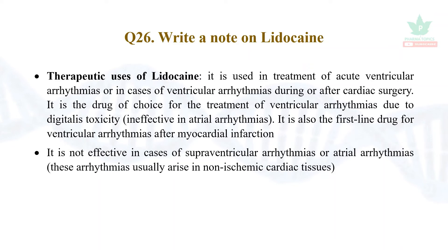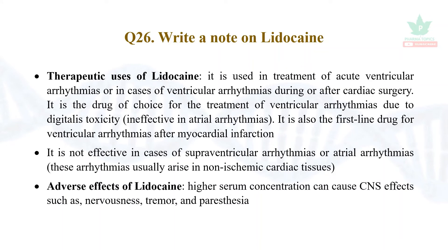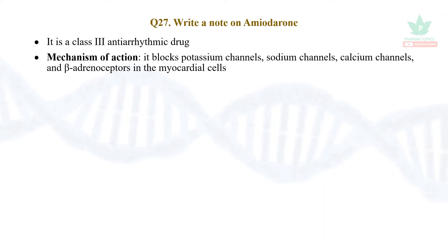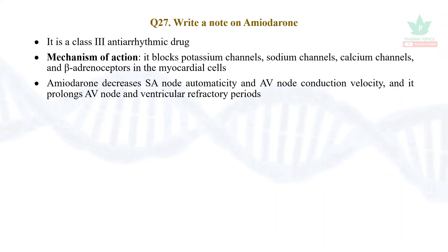Adverse effects of lidocaine: high serum concentrations can cause CNS adverse effects such as nervousness, tremor, and paresthesia. Amiodarone is a Class 3 anti-arrhythmic drug. It blocks potassium channels, sodium channels, calcium channels, and beta adrenoreceptors in myocardial cells — it may also be called a wide-spectrum anti-arrhythmic drug. It decreases SA node automaticity, AV conduction velocity, and increases the ventricular refractory period.